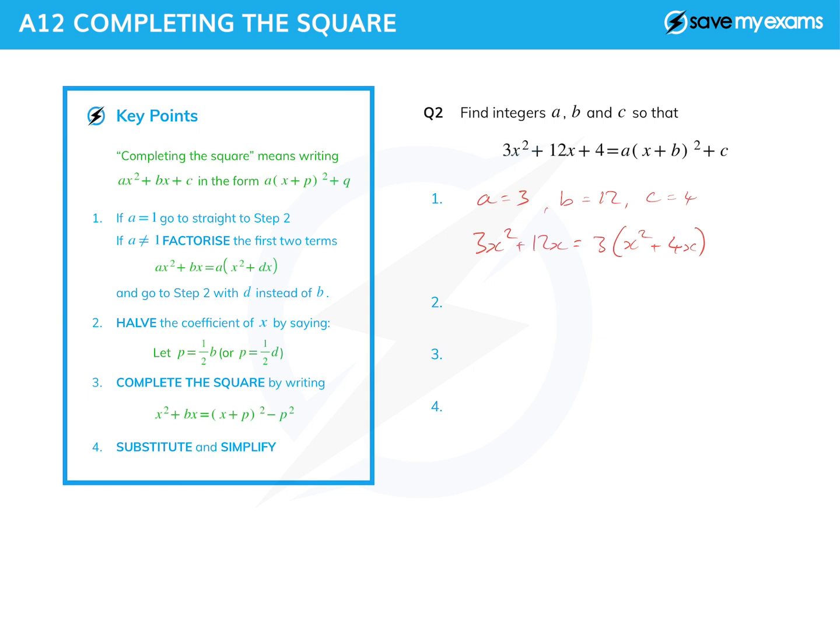I'm now going to go on to step two, but with d instead of b. Well, that just means I'm using the 4 instead of the 12 that b was. Okay, so I can now say, as we did before, let p, a new number, equal a half of the coefficient of x inside the bracket. That's this d here. Okay, and so it's a half of 4, which is 2.